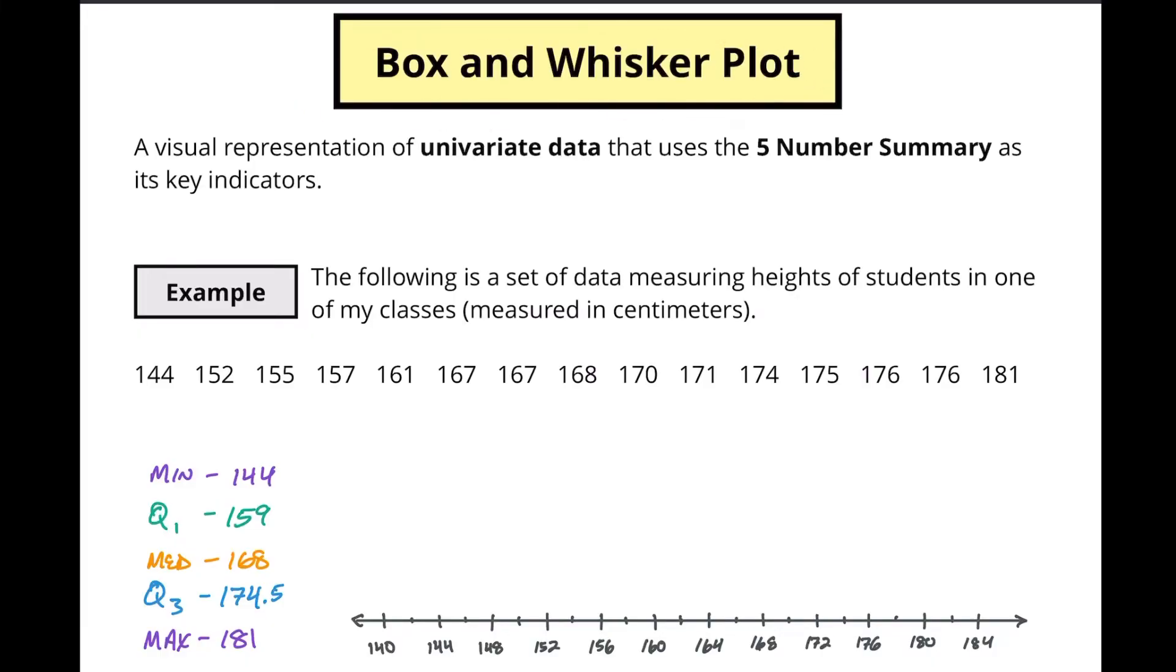So a box and whisker plot is a visual representation of univariate data, which means one variable data, and it uses a five number summary as its key indicators. In a previous video we discussed what these five numbers were: the minimum, quartile 1, median, quartile 3, and maximum. If you're not sure what I'm talking about with those five numbers, make sure you check out the video about the five number summary linked in the description below.